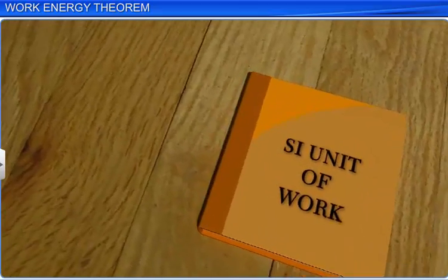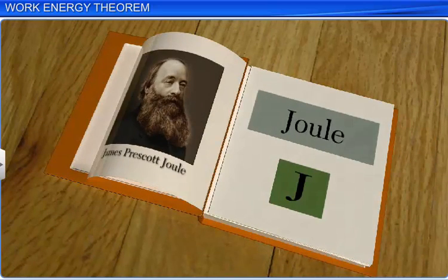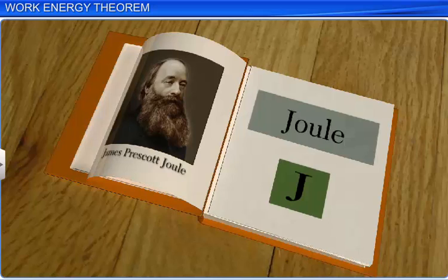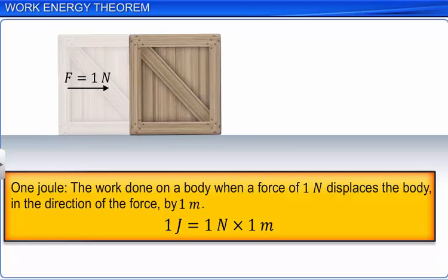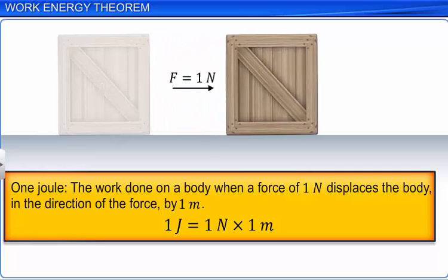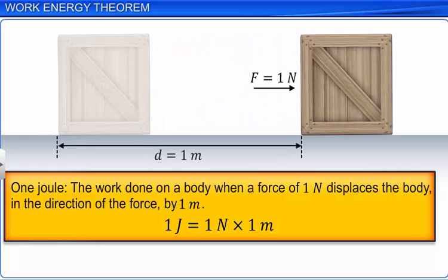The SI unit of work is the joule, denoted by J, named after the famous British scientist James Prescott Joule. One joule is defined as the work done on a body when a force of 1 newton displaces the body in the direction of the force by 1 metre.